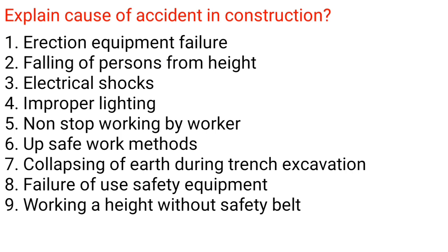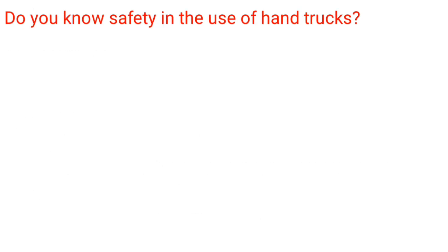Explain causes of accidents in construction: 1. Erection equipment failure. 2. Falling of persons from height. 3. Electrical shocks. 4. Improper lighting. 5. Non-stop working by workers. 6. Unsafe work methods. 7. Collapsing of earth during trench excavation. 8. Failure to use safety equipment. 9. Working at height without a safety belt.